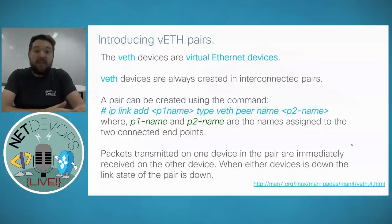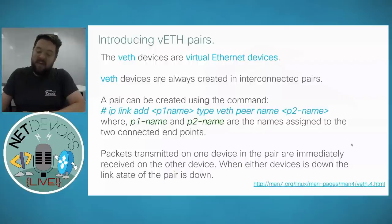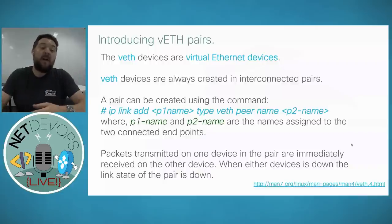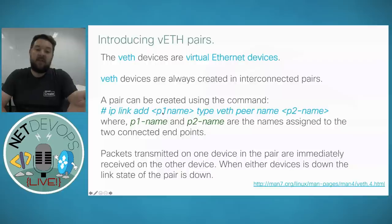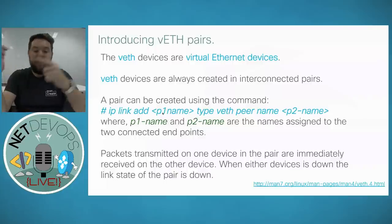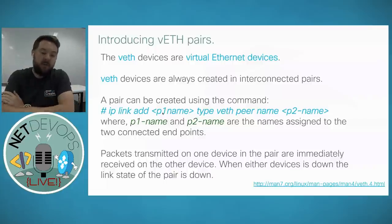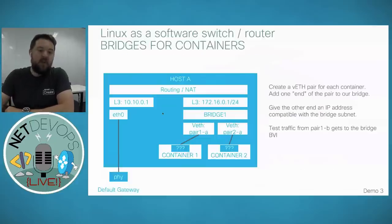Let me introduce veth — there are two parts to the magic of container networking, and this is the first. A veth is a virtual ethernet device that you can create in Linux in software. They are always created in pairs, and what goes into one end comes out the other. With the command 'ip link add <name1> type veth peer name <name2>', you get two interfaces where any packet transmitted into either immediately appears at the other side.